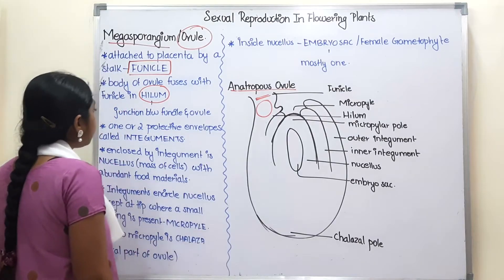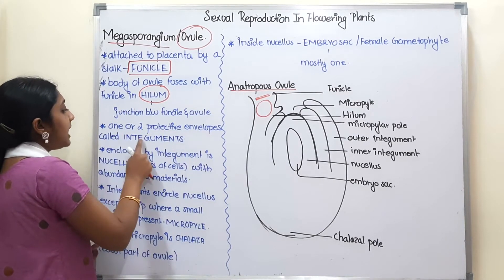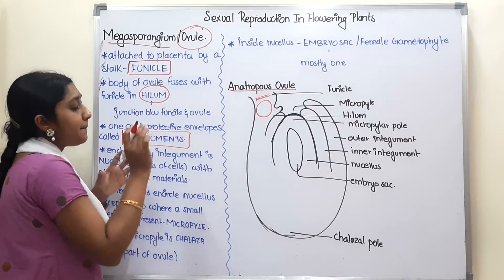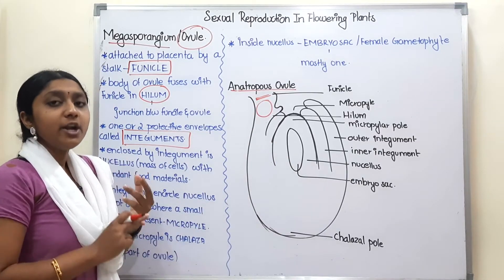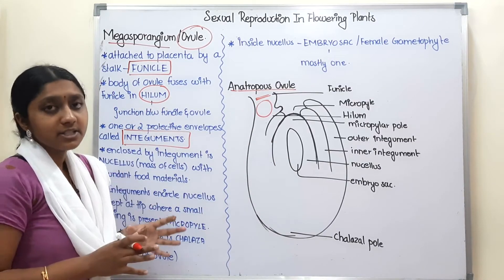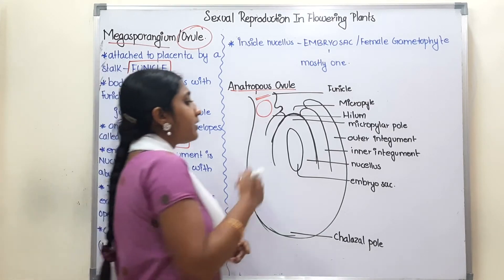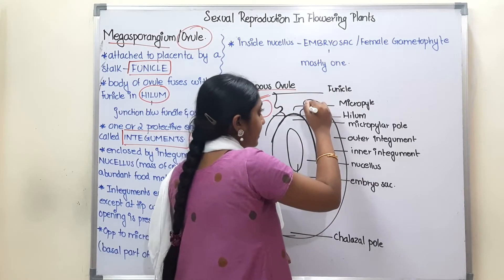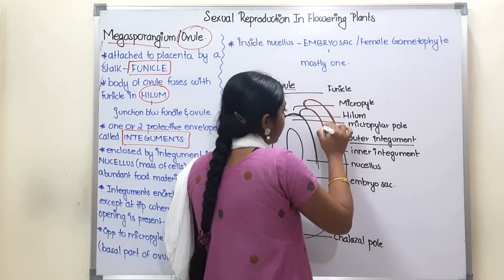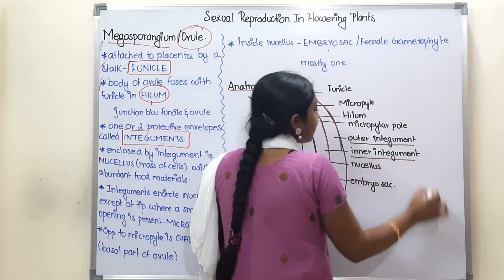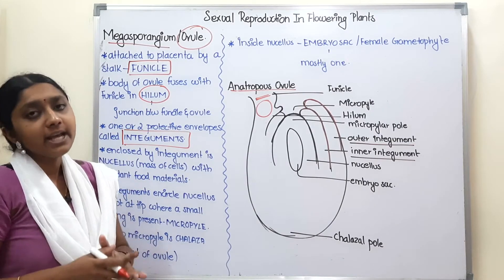Next, there are one or two protective envelopes called integuments. If you look at the ovule, there are one or two protective layers. In general, there are two integuments — the outer integument and the inner integument. The integuments are the protecting layer of the ovule.